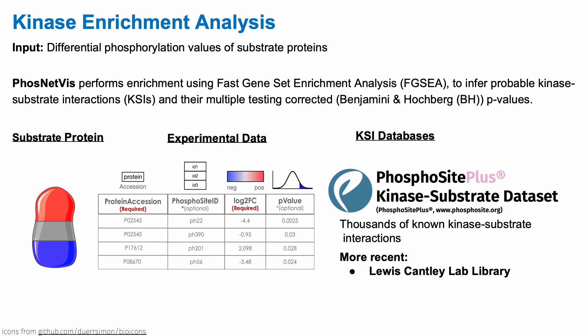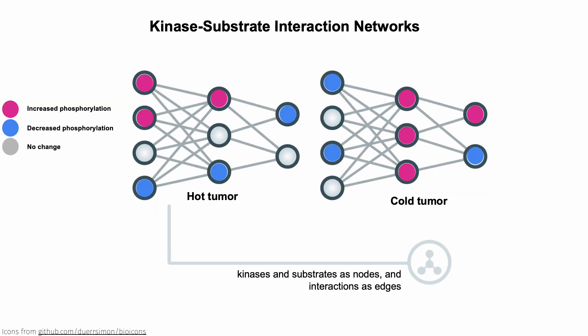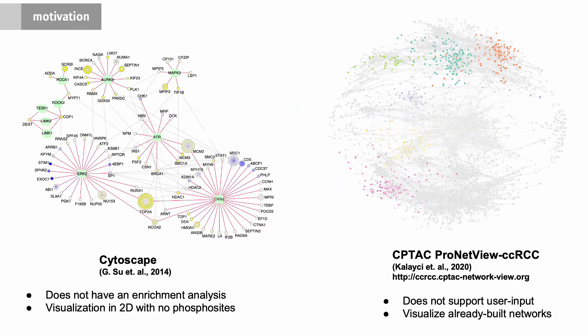PhosphoSitePlus is the most popular and most useful kinase substrate interaction data library, which includes thousands of known interactions. More recently, there are other libraries, such as Lewis County Labs' most recent publications, but those are more complex. And these kinase substrate interactions differ between different types of cellular processes. For example, we have a hot tumor kinase substrate interaction and a cold tumor kinase substrate interaction. And you see that not only the interactions change in terms of who interacts with who, but also the phosphorylation levels change. So it's important to be able to represent all of this.